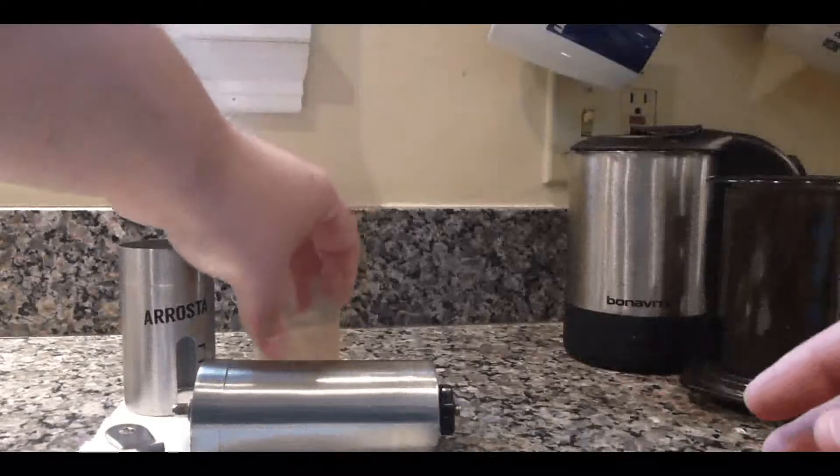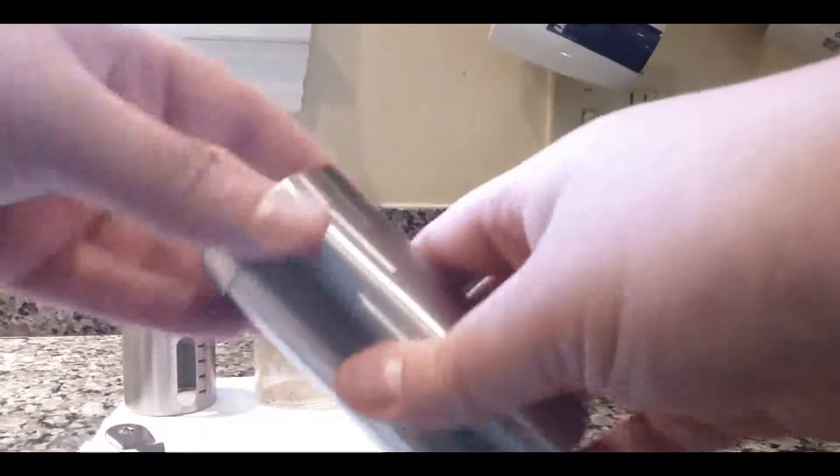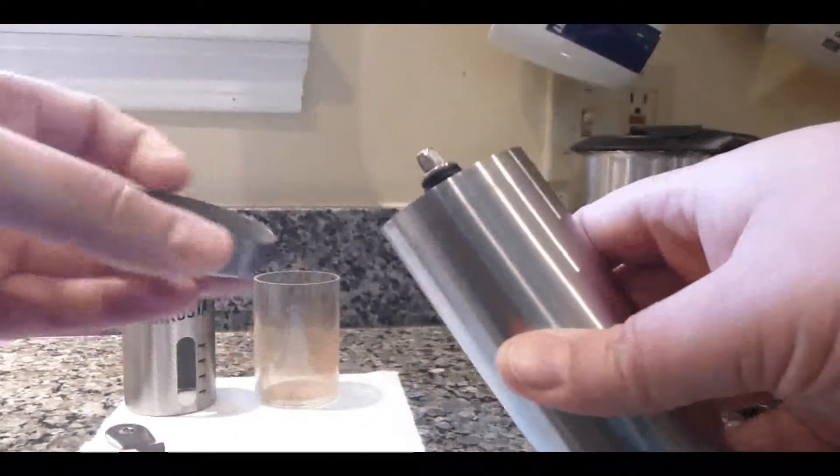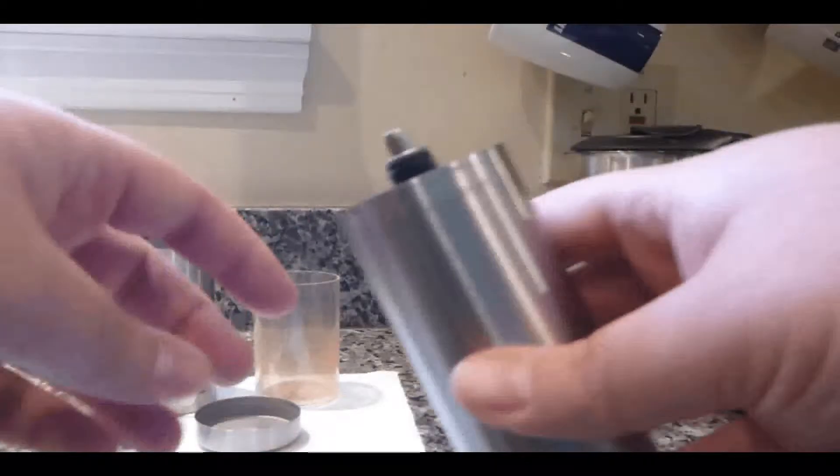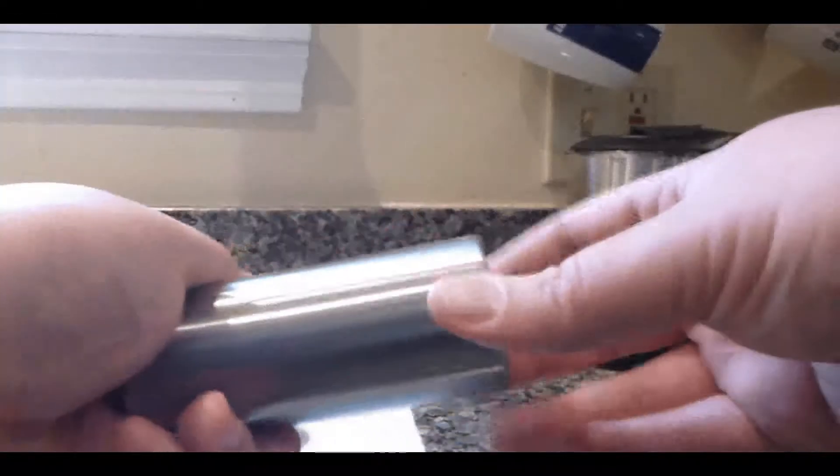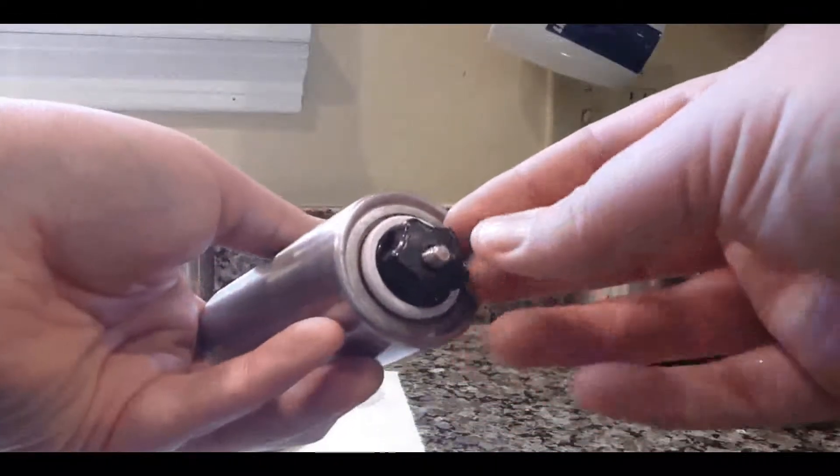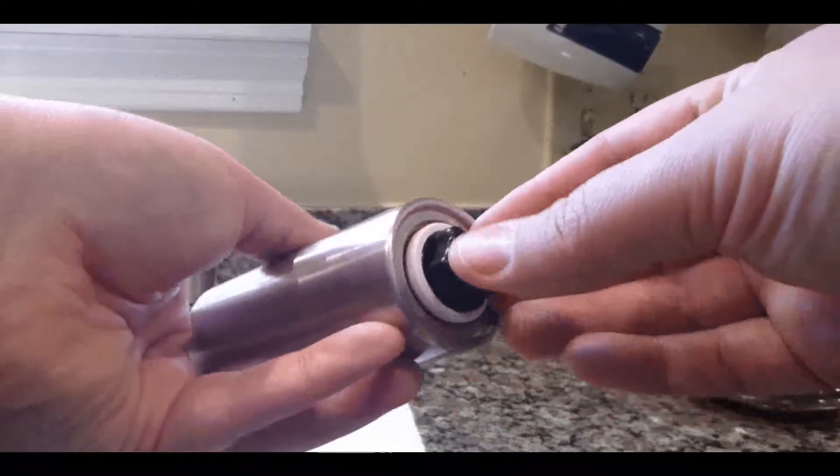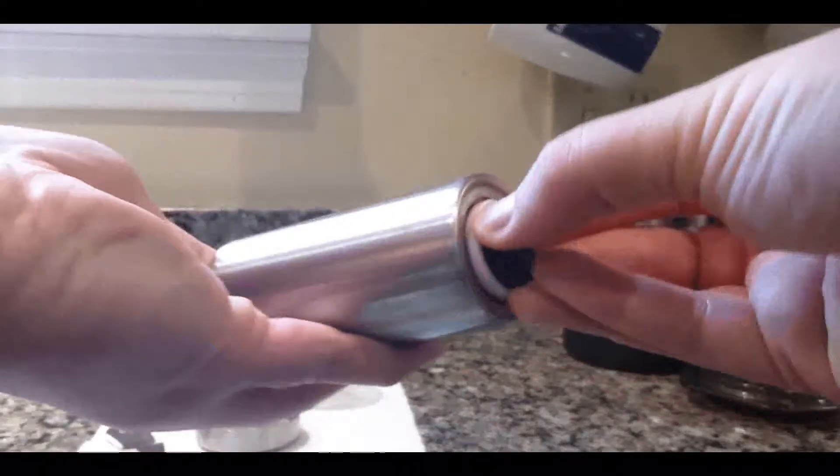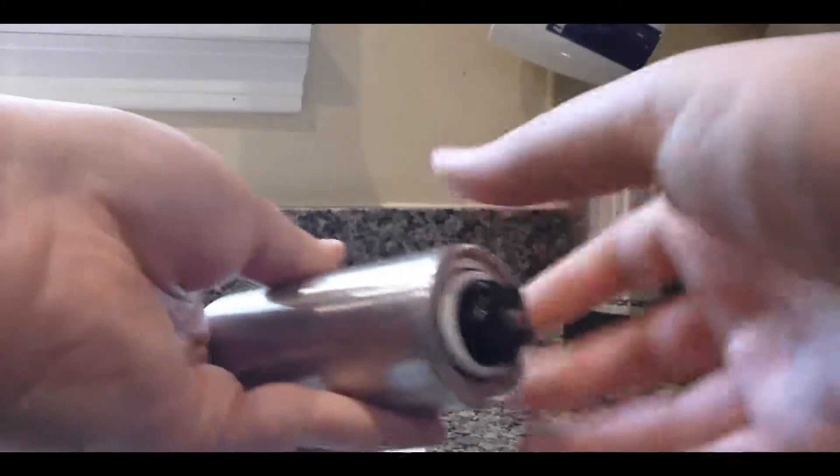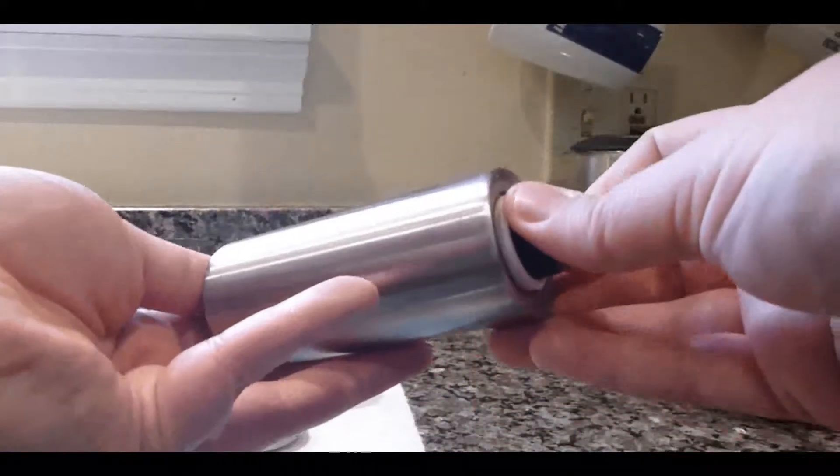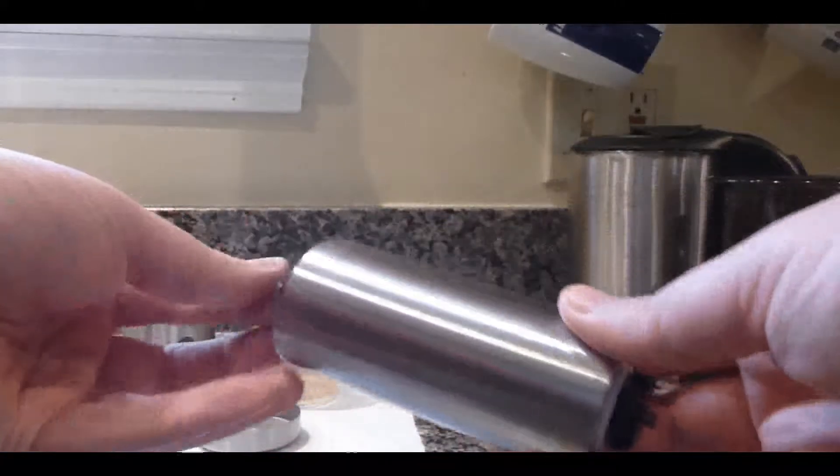Up above, we'll remove our grinder cap. And in order to remove the actual ceramic burr grinder section, we're going to loosen this thumb screw. Now it may be difficult to loosen if you can't get a good grip up here.